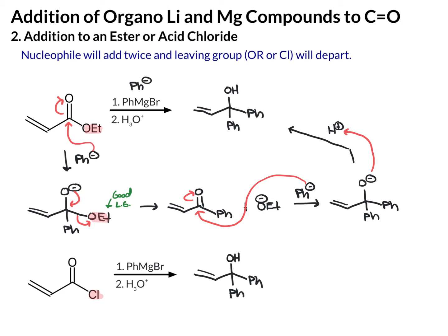The byproduct is the Cl minus you lost, which will actually get protonated to give you HCl. Similarly, OEt minus — when you add acid to the reaction flask, it'll protonate any oxygens, so it'll protonate the ethoxide to give you ethanol.